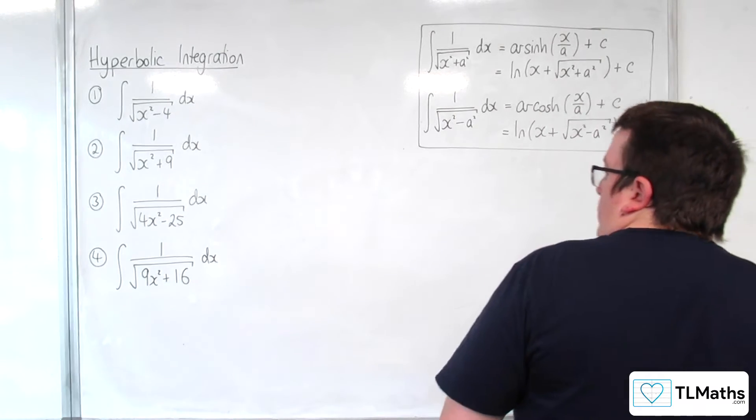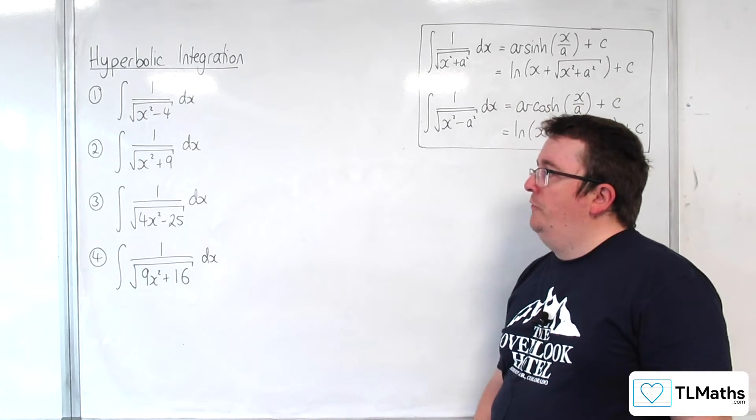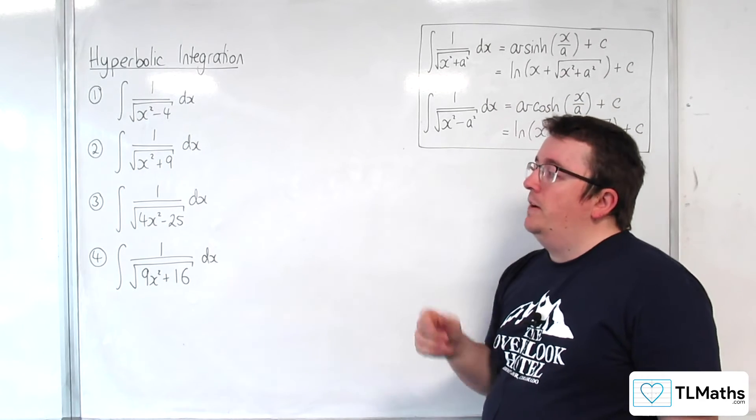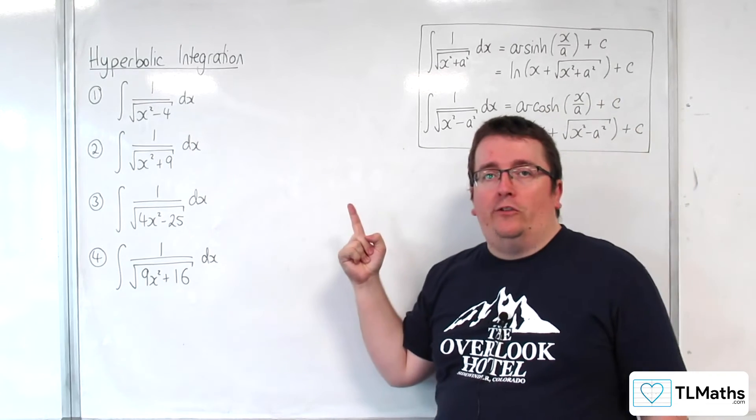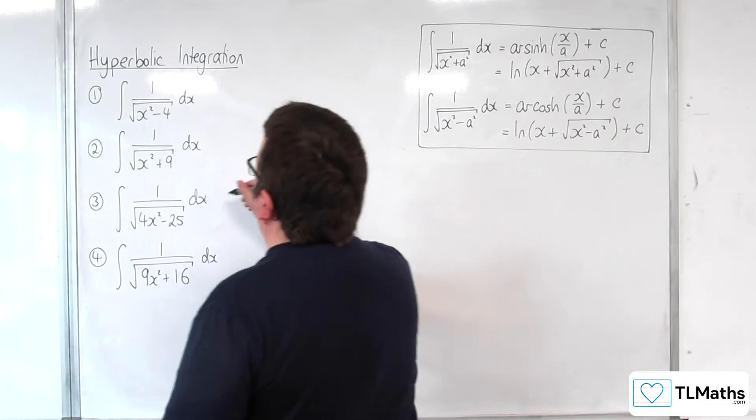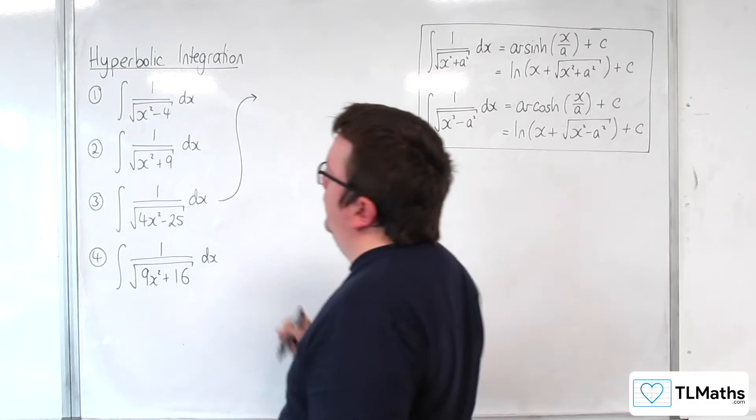Now here we've got the integral of 1 over the square root of 4x squared take away 25. Now in order to use these, we need to get the coefficient of x squared to be 1. So what I'm going to need to do is a little bit of manipulation first.